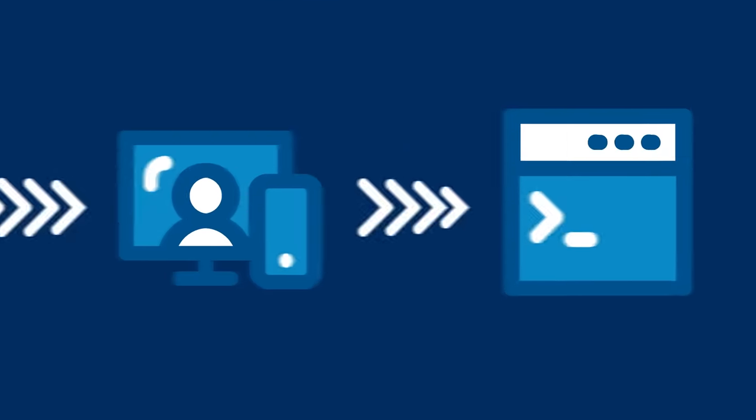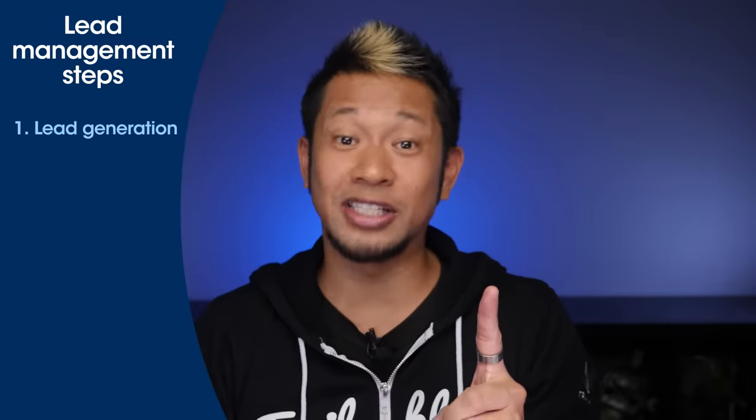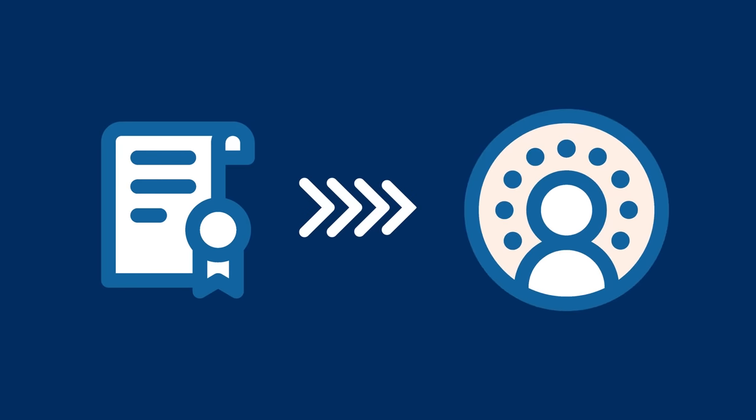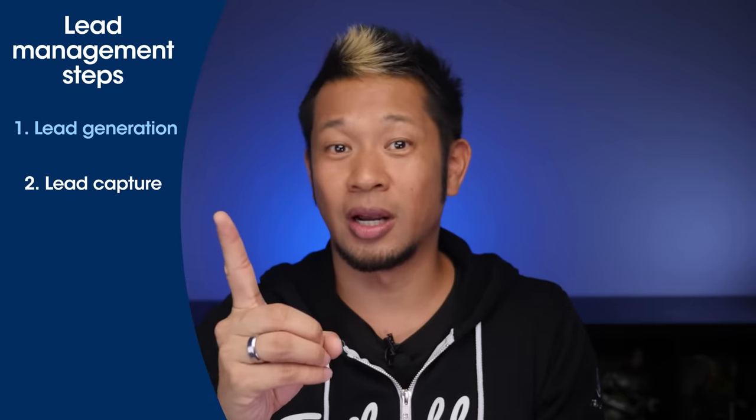And there you have it — five stages of lead management. But what does it look like in practice? Here's a quick example to bring it all home. Here's Iman. Iman clicked on one of your company's LinkedIn posts, which led him to your website — that's lead gen. From there, he filled out a form requesting more information, and Salesforce created a new lead record for Iman — that's lead capture. Before Iman even filled out the form, Salesforce started tracking his activity on your site and social channels — that's lead tracking.